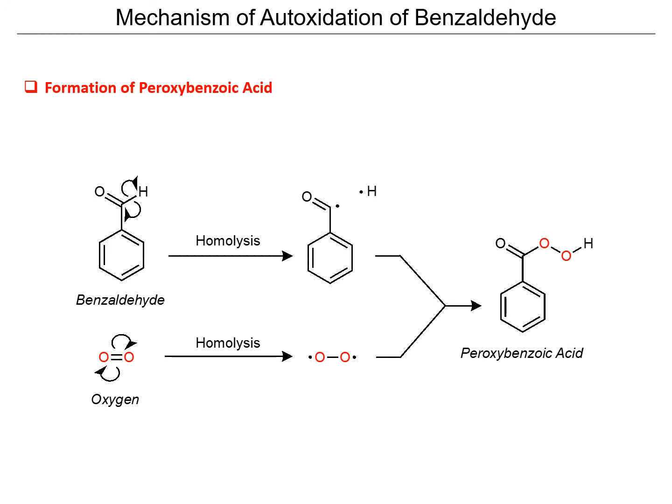The mechanism of auto-oxidation of benzaldehyde involves the formation of peroxybenzoic acid. Here we show a homolytic fission of the carbon-hydrogen bond in order to form two different radical species: the benzaldehyde radical and one hydrogen radical. The oxygen also undergoes homolytic bond breaking, forming a diradical species that is readily reactive with the benzaldehyde radical, forming the peroxybenzoic acid.